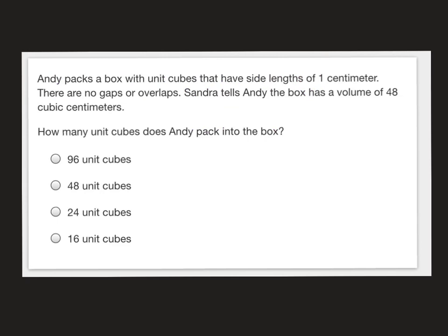This is another easy one. It gives you a big word problem, but what it's asking is if they pack a box with unit cubes that have a side length of one centimeter, there's no gaps or overlaps, and it has a volume of 48 cubic centimeters, how many unit cubes can it fit? 48 unit cubes. That's it.